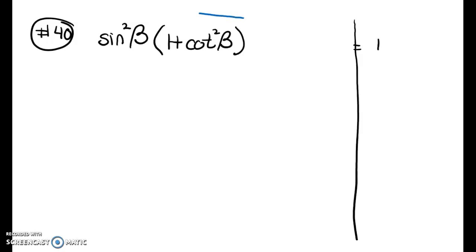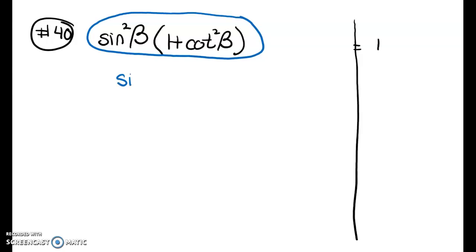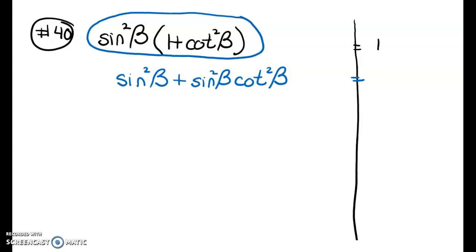For the next example, the more complicated side is the left-hand side again — though that's not always the case. I notice I can distribute sine squared of beta across the binomial, giving sin²β + sin²β · cot²β.